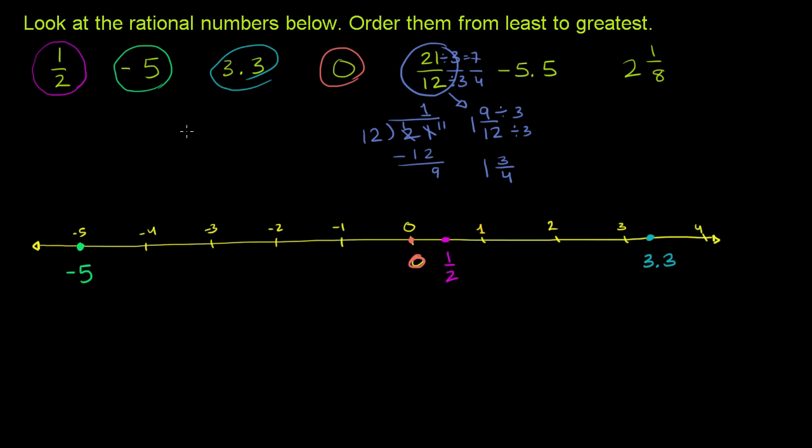21 divided by 3 is equal to 7. And 12 divided by 3 is equal to 4. So this is the same thing as 7-fourths. And if you were to divide 4 into 7, 4 goes into 7 one time. Subtract. 1 times 4 is 4. Subtract, you get a remainder of 3.